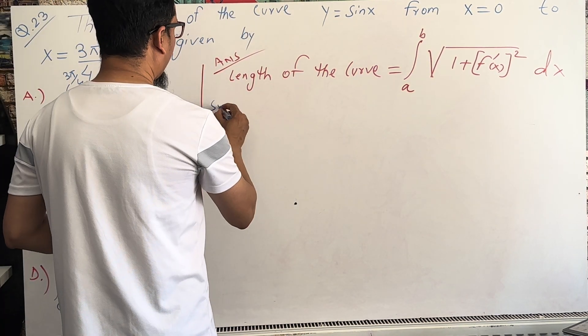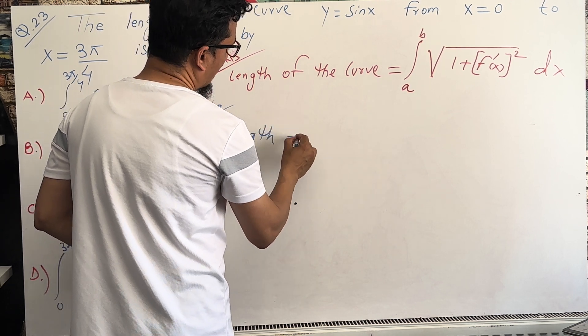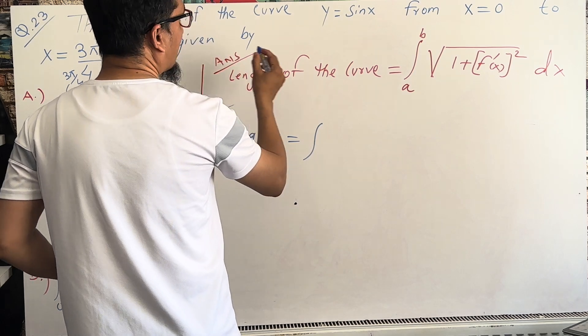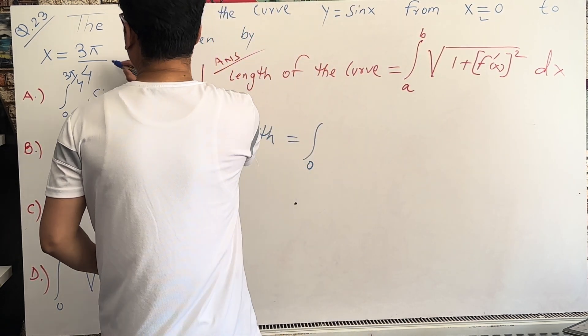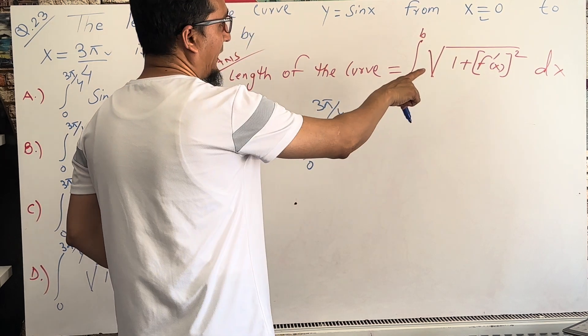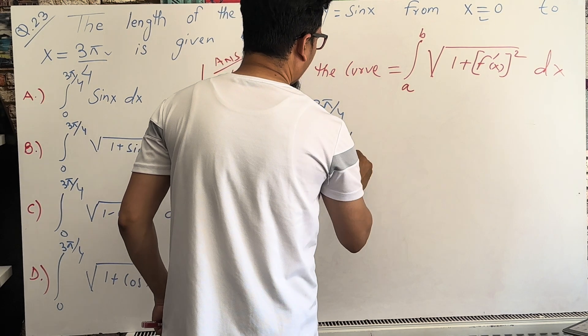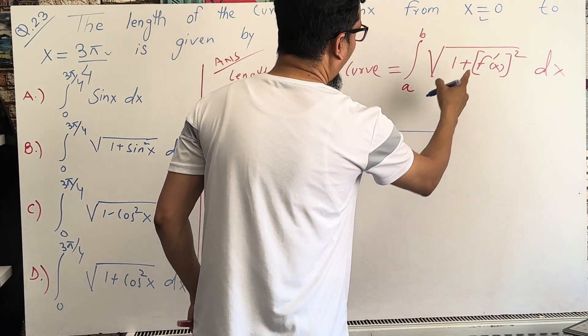So the length is equal to, lower limit which is 0, upper limit which is 3π/4. Now we need f prime of x.